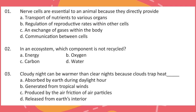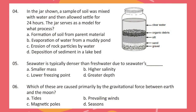Question 3. Cloudy nights can be warmer than clear nights because clouds trap heat. Question 4. In the jar shown, a sample of soil was mixed with water and then allowed to settle for 24 hours. The jar serves as a model for what process? Question 5. Seawater is typically denser than freshwater due to seawater's what?